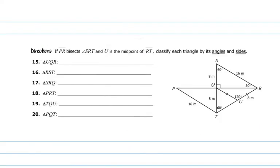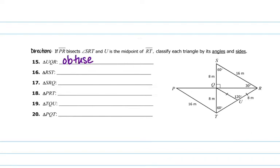For problems 15 through 20, we're going to use the diagram on the right. If PR bisects angle SRT and U is the midpoint of RT, classify each triangle by its angles and sides. For UQR, which is this triangle over here, that would be obtuse and isosceles because it has 120 degrees and two sides are congruent.